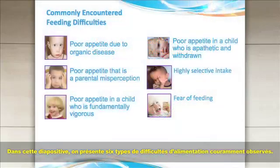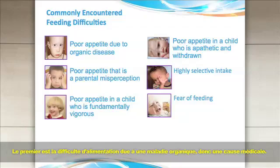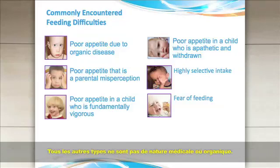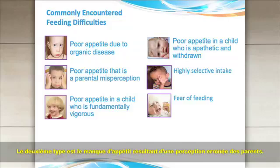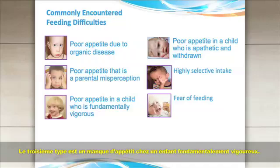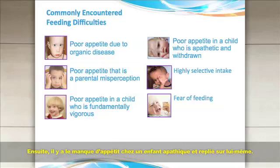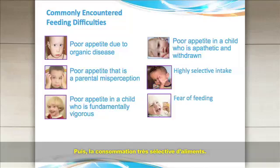This slide depicts the six types of commonly encountered feeding difficulties. The first is feeding difficulty due to organic disease — the medical causation. All other types are non-medical or non-organic. The second type is poor appetite that is a parental misperception. The next is poor appetite in a child who is fundamentally vigorous, then poor appetite in a child who is apathetic and withdrawn. Then feeding difficulty in the highly selective child, and feeding difficulty due to fear of feeding.